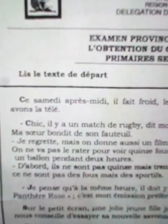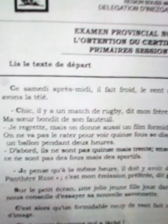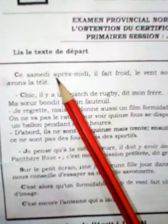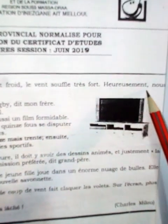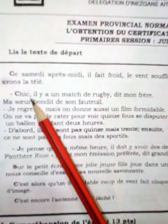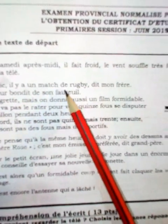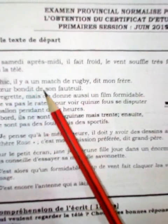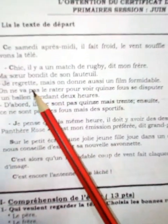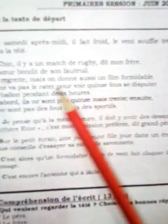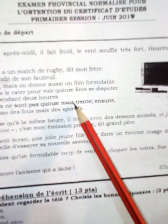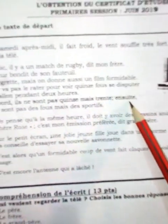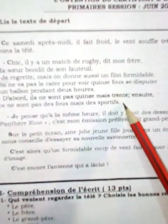Le texte est un texte du départ, donc il n'y a pas de titre. Ce samedi après-midi, il fait froid. Le vent souffle très fort. Heureusement, nous avons la télé. Chic ! Il y a un match de rugby, dit mon père. Ma sœur bondit de son fauteuil. Je regrette, mais on donne aussi un film formidable. On ne va pas le rater pour voir 15 fous se disputer un ballon pendant deux heures. D'abord, ils ne sont pas 15, mais 30. Ensuite, ce ne sont pas des fous, mais des sportifs.